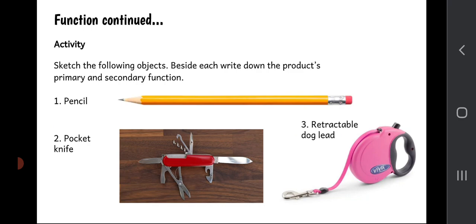Here's an activity I want you to do. Once I've finished talking, you can pause the video and you can do this activity into your books. I want you to sketch the following objects, and I don't just mean a little quick doodle—I mean a sketch to the highest quality, because after all, as designers, we've got to communicate using drawings and sketches. Three objects, three drawings. Beside each sketch, I want you to write down in a full sentence what the primary and secondary function is of each of those objects.